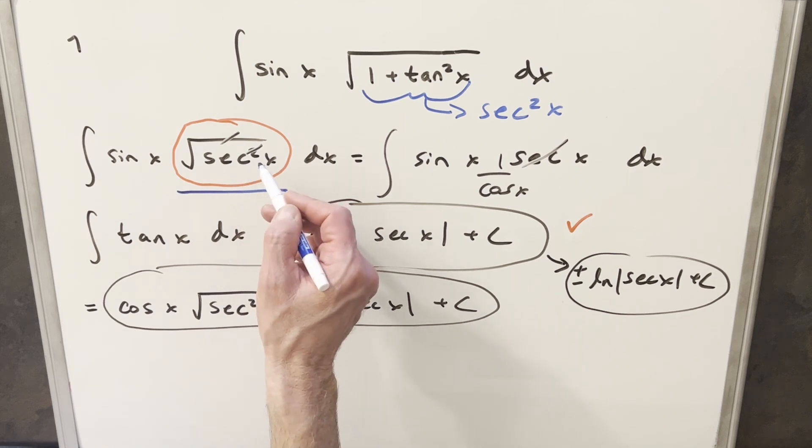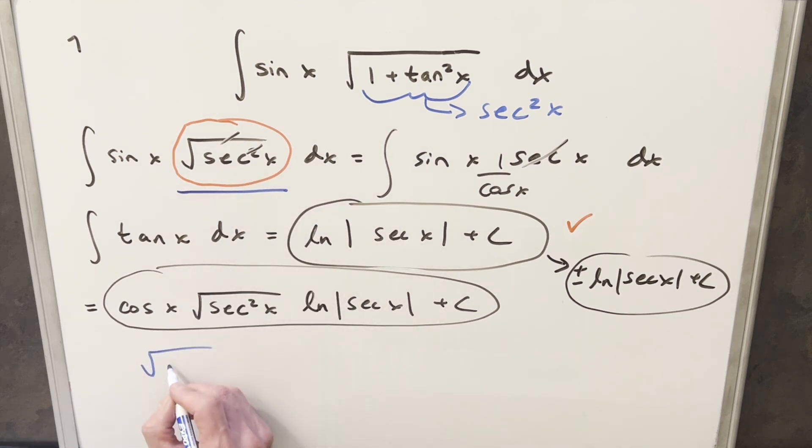this is where we ran into trouble with our square root of secant squared x. If we just take that and leave it, but then divide by what we got, divide by secant x here, this value actually covers all cases really, because when secant x is greater than zero, this becomes secant x over secant x, so that's just one.